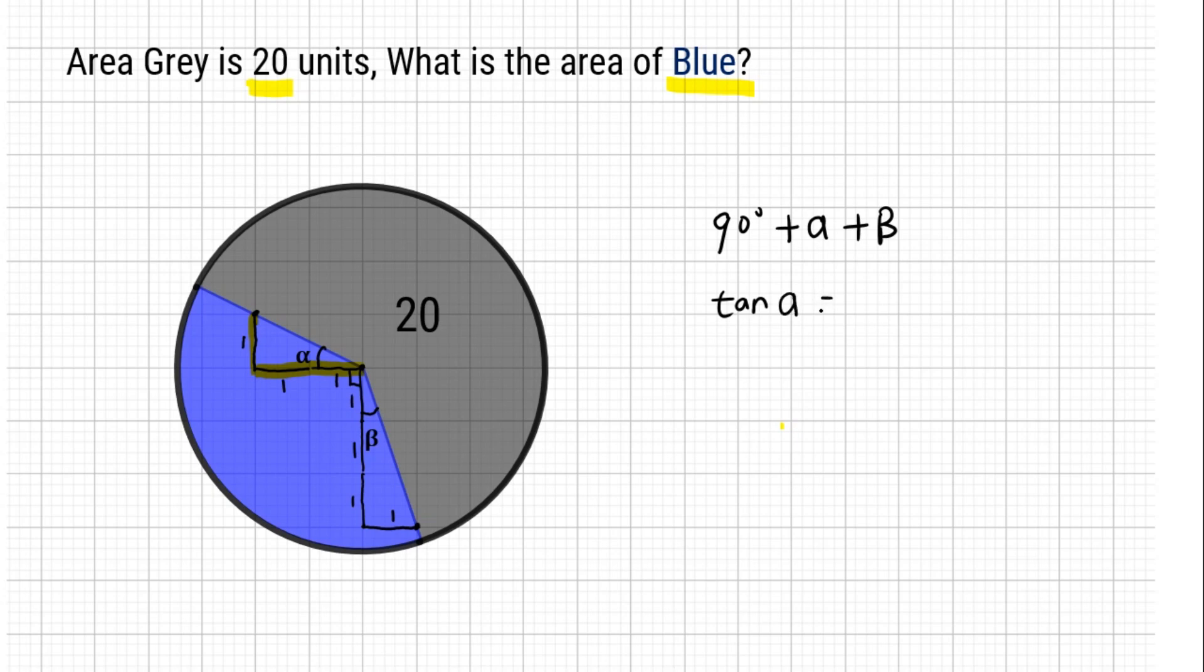We can get tangent alpha is 1 over 2, tangent beta is 1 over 3.